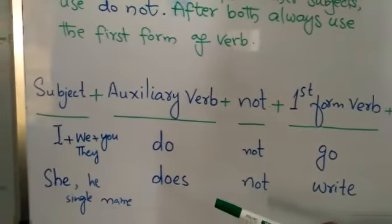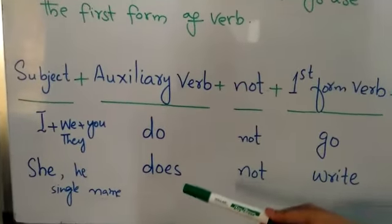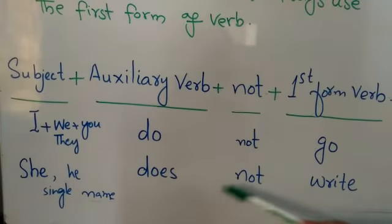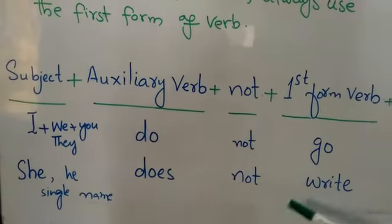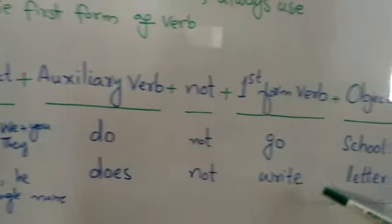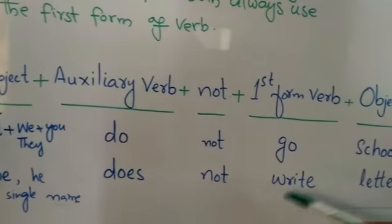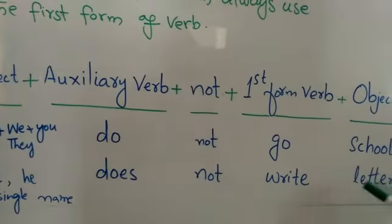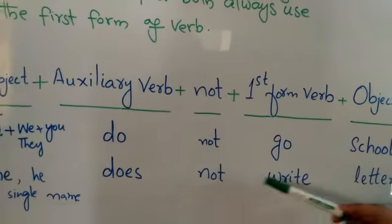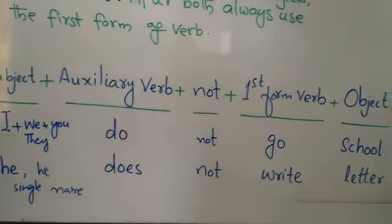For third person singular — he, she, or any singular name — we use 'does not'. For example: She does not write a letter. He does not write a letter. Sarah does not write a letter.